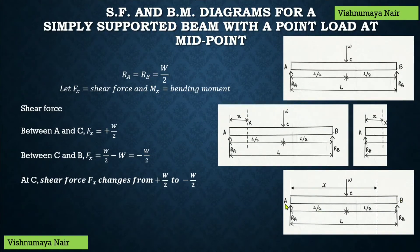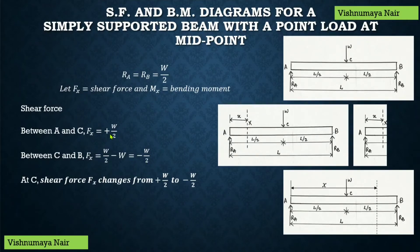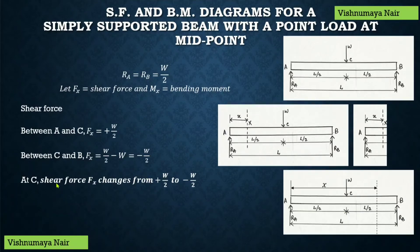So we can understand that the shear force changes from +W/2 to −W/2 at point C. Between points A and C, shear force equals +W/2, and between points C and B, shear force equals −W/2. It will be clear when I show you how to draw the shear force diagram. At C, shear force changes from +W/2 to −W/2.